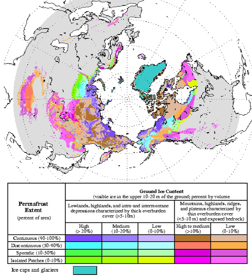Alpine permafrost in the Andes has not been mapped. Its extent has been modelled to assess the amount of water bound up in these areas. In 2009, a researcher from Alaska found permafrost at the 4,700 metres level on Africa's highest peak, Mount Kilimanjaro, approximately 3 degrees north of the equator.